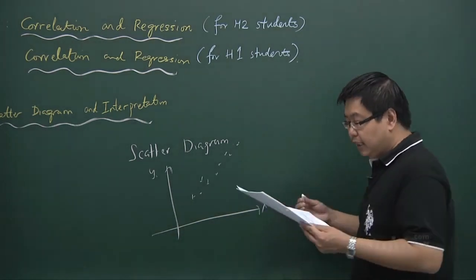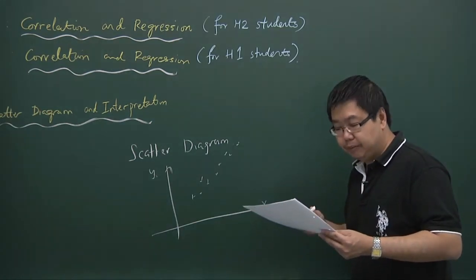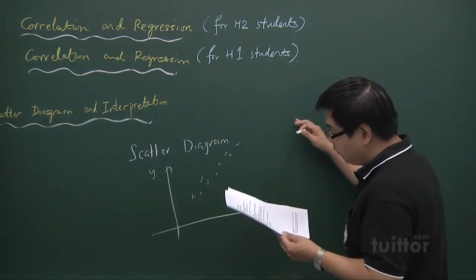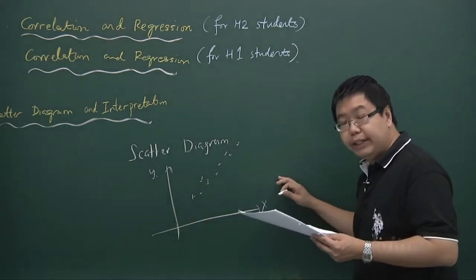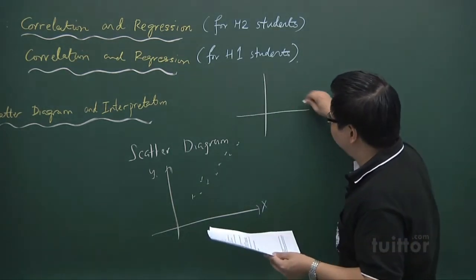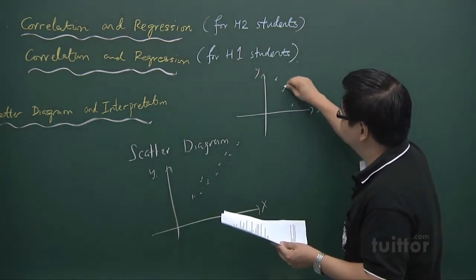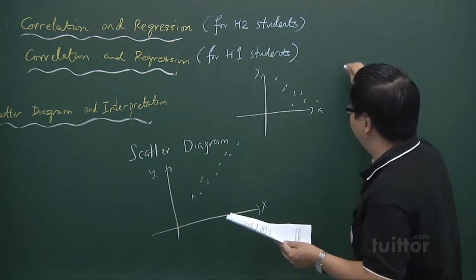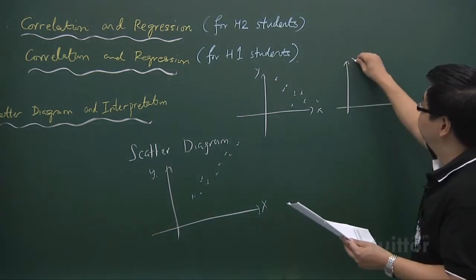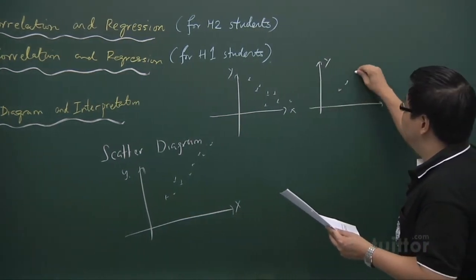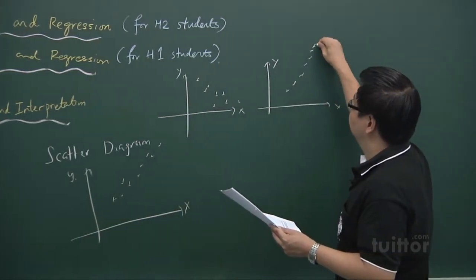First, it allows us to see the direction of the relationship, whether it is positively or negatively correlated. That means whether the relationship is negative or whether the relationship is positive.